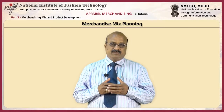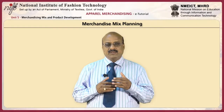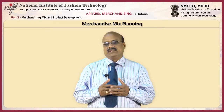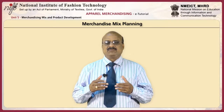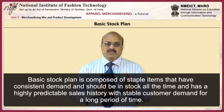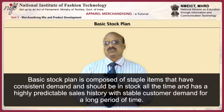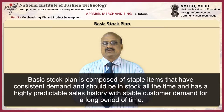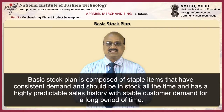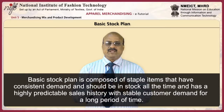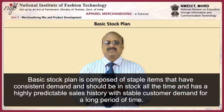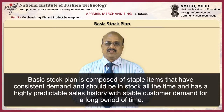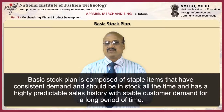BOM, beginning of the month, and EOM, end of the month inventory levels are calculated from each month of plans. The basic stock plan is composed of staple items that have consistent demand and should be in stock all the time, and has a highly predictable sales history with stable customer demand for a long period of time.